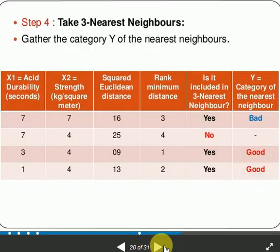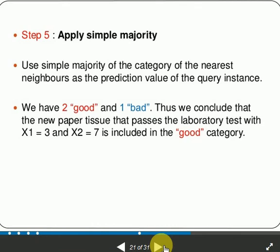Now we can find that these three rows belong to the classes bad, good, and good. Next, we go for majority voting. Since majority values are good, we choose good. So that's the result. We can say that the value X1 equal to 3 and X2 equal to 7 belongs to the class good.